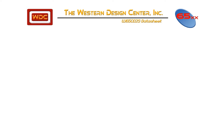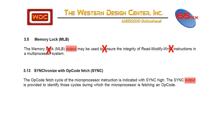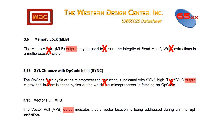Let's look at what the Western Digital 65C02 datasheet has to say about these signals. Any outputs that we don't need, we can just leave disconnected. The memory lock output may be used to ensure the integrity of read-modify-write instructions in a multiprocessor system, so we don't need that. Sync output is provided to identify those cycles during which the microprocessor is fetching an opcode. We store our program data and instructions in the same memory, so we don't really care about this. I'm not sure why we really need this in an 8-bit system, but if anyone knows, put it in the comments below.